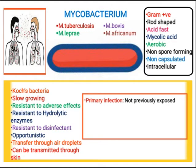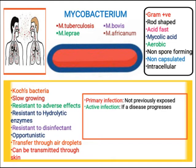When bacteria first enter and infect the body, this is called a primary infection. In the case of primary infection with Mycobacterium tuberculosis, it can become an active infection, in which the infection progresses and symptoms appear.